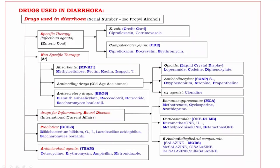Next, Drugs for Inflammatory Bowel Disease are further subdivided into I-C-A: I for Immunosuppressants, C for Corticosteroids, A for 5-Aminosalicylic Acid Compounds. Immunosuppressants mnemonic is M-C-A: M for Methotrexate, C for Cyclosporin, A for Azathioprine.